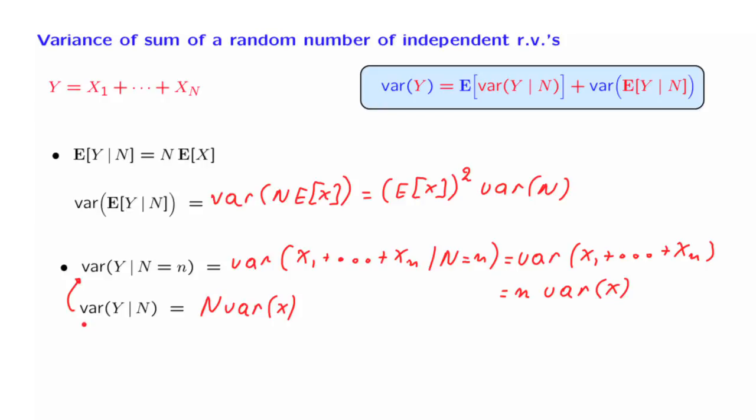Now that we have an expression for the conditional variance as a random variable, we can take the next step and calculate the expected value of the conditional variance. The expected value of the conditional variance is simply the expected value of this expression that we calculated up here. And now the variance of X is a constant and can be pulled outside the expectation, which leaves us with this expression here.